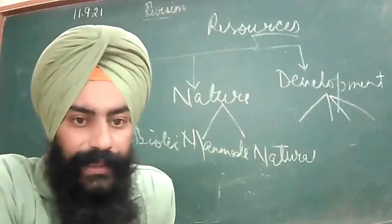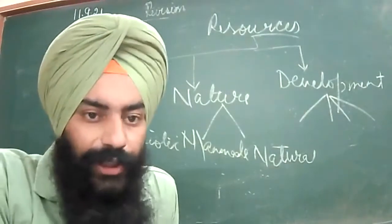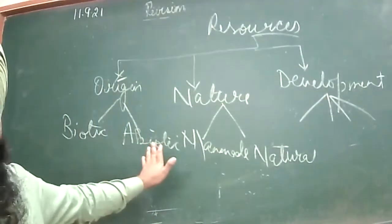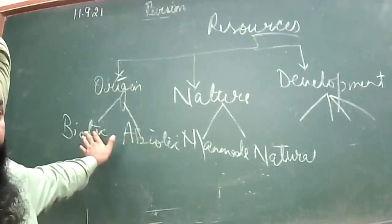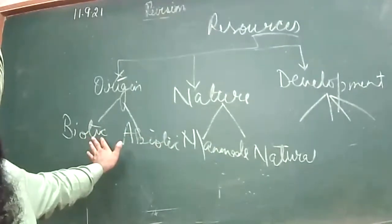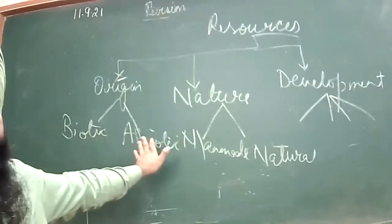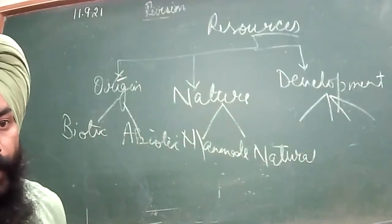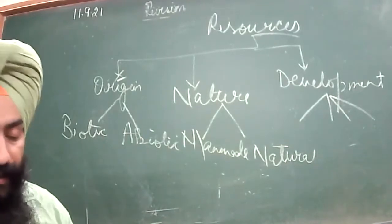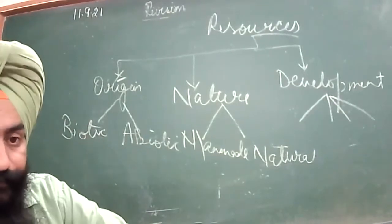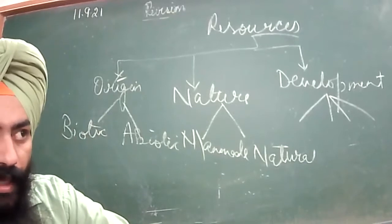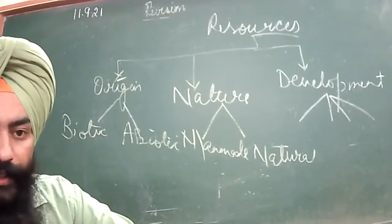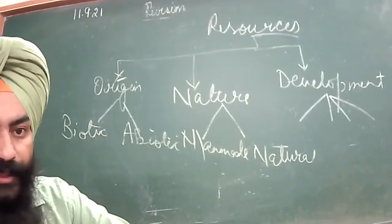On the basis of origin, two types of resources are there — biotic and abiotic. Biotic resources consist of living beings. Abiotic resources consist of non-living things. Biotic resources are renewed through reproduction processes.